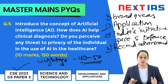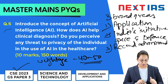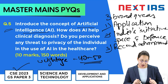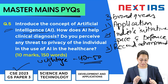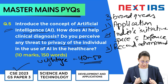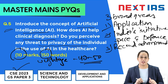Today's question is Question Number 5 of GS Paper 3 of the 2023 examination. The question is: 'Introduce the concept of Artificial Intelligence. How does Artificial Intelligence help in clinical diagnosis? Do you perceive any threat to the privacy of the individual in the use of AI in healthcare?' It is of 10 marks and needs to be written in 150 words.